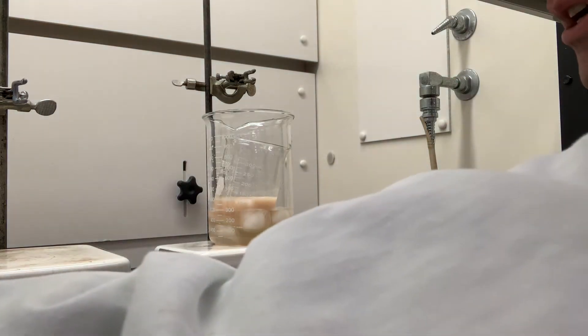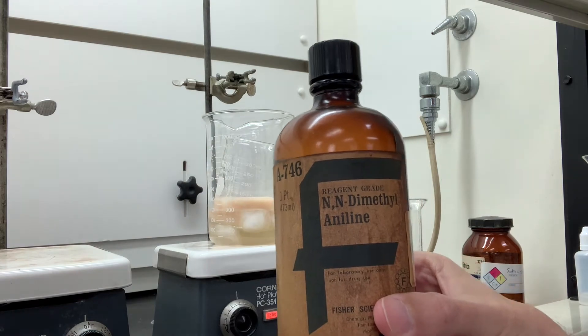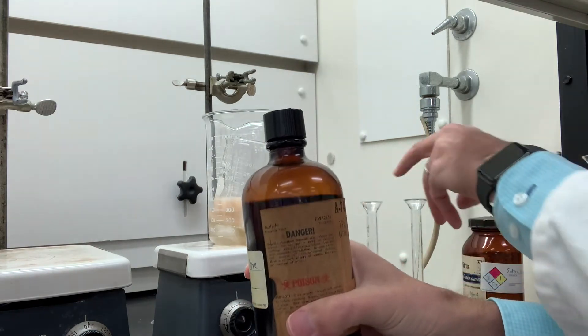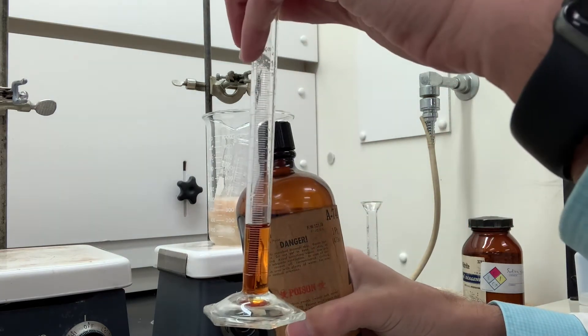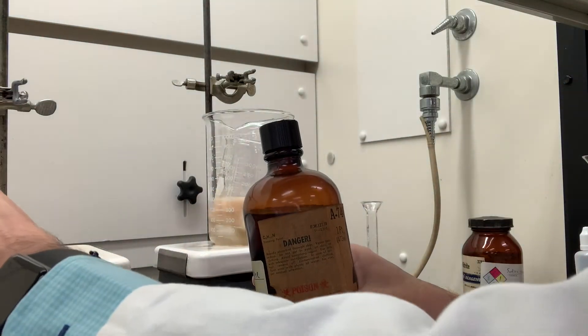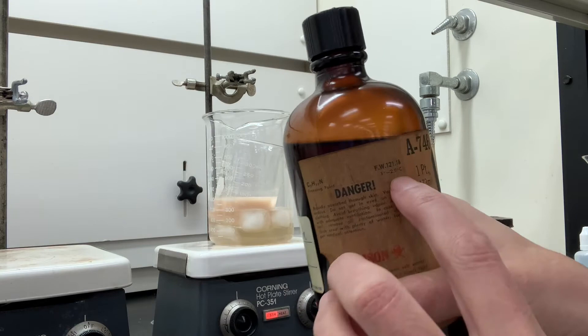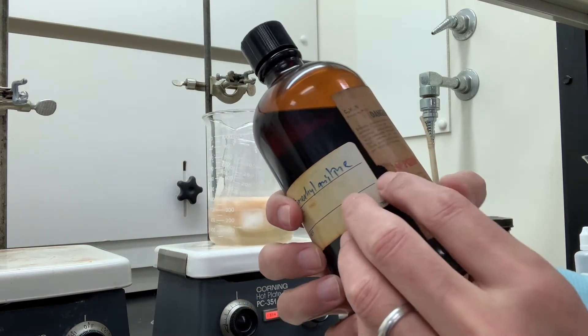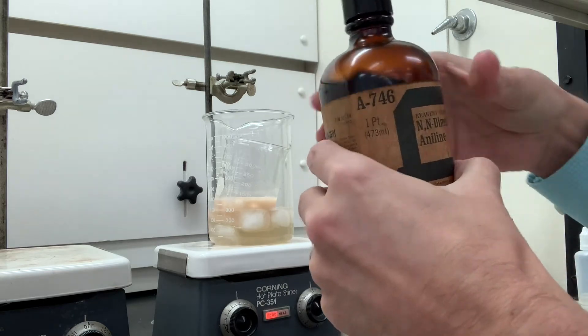Here's the information for dimethyl aniline. It's supposed to be a clear, colorless liquid, but there are some impurities in here that give this kind of light color. Here's its formula weight, its melting point, and the density is not on this bottle here.